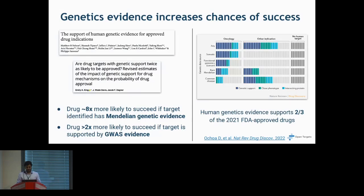Various studies have looked at the success rate of different compounds throughout the clinical trial phases. Compounds that have a lot of direct genetic support are more likely to progress through the pipelines. Drugs are eight times more likely to succeed if the target has Mendelian genetic evidence, and two times more likely if they have GWAS evidence. Looking at 2021 FDA drug approvals, at least two-thirds had human genetics evidence. So the more information we have about the target, the better the chances of creating a compound to modulate it.